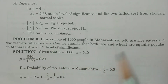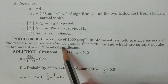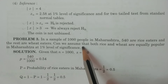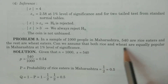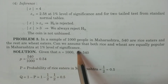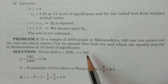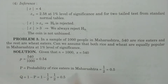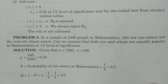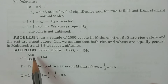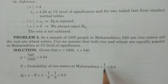The rest are wheat eaters. The question is: can we assume that both rice and wheat are equally popular in Maharashtra at one percent level of significance? To address this, we calculate small p as x by n, that is 540 by 1000, which equals 0.54.